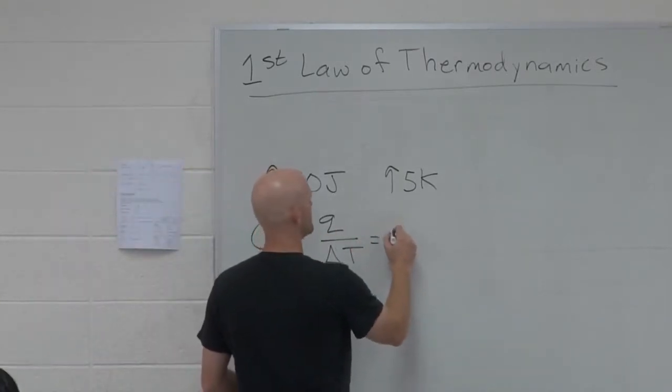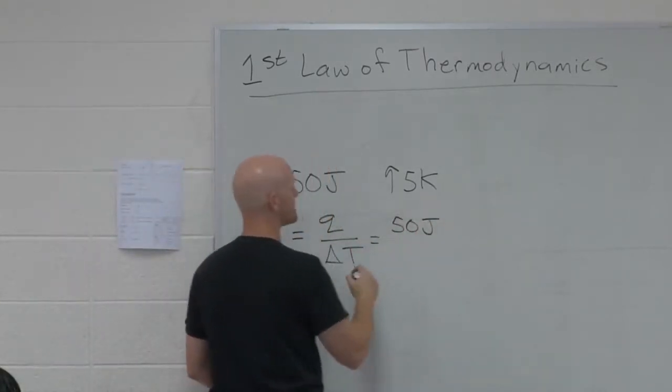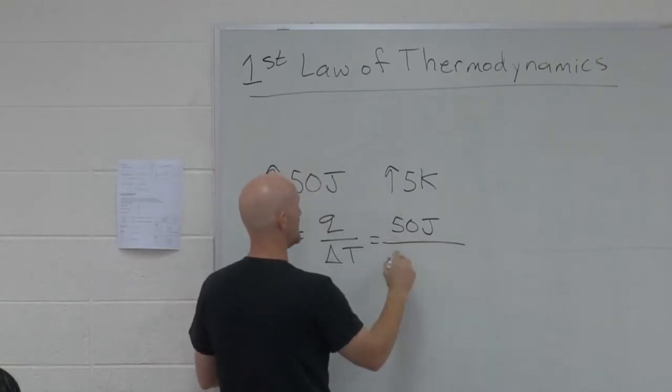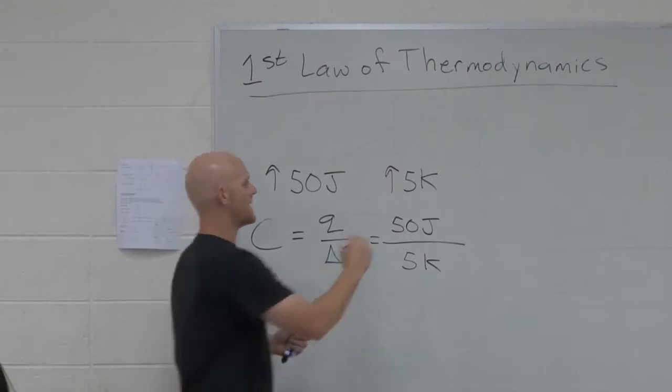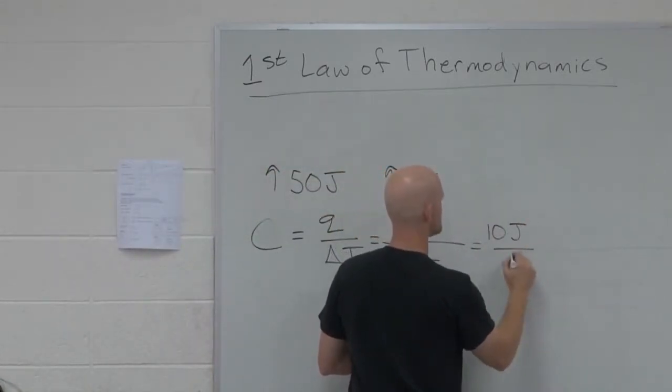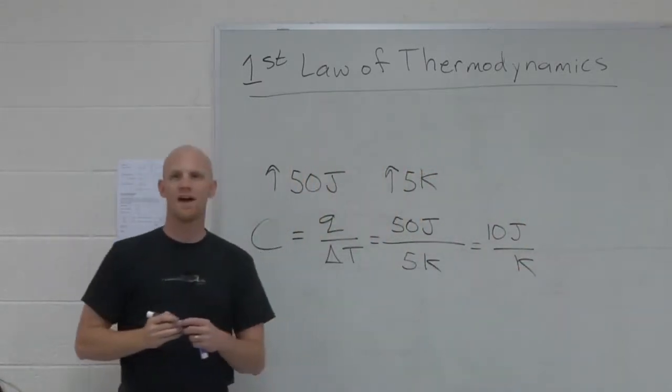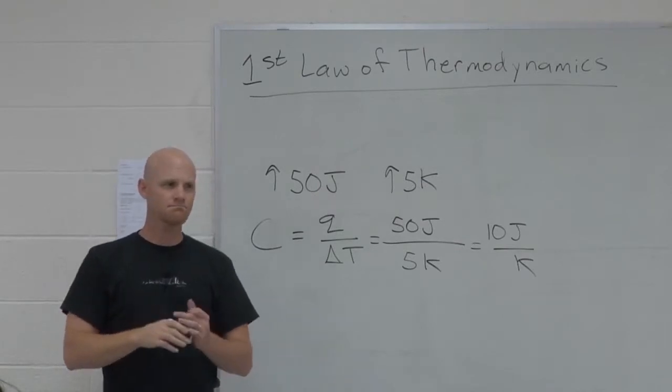And so in this case, we put in 50 joules into the system. That's positive 50 joules as far as the system is concerned. And it changed its temperature positive five Kelvin, and that came out to ten joules per Kelvin. That's called the heat capacity.